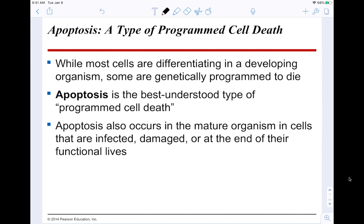Apoptosis is a really important part of development — it's programmed cell death, essentially cell suicide. While most cells are differentiating in a developing organism, some are actually programmed to die. Apoptosis also occurs in mature organisms in cells that are infected, damaged, or at the end of their functional lives — it's for the greater good, preventing damaged cells from dividing.